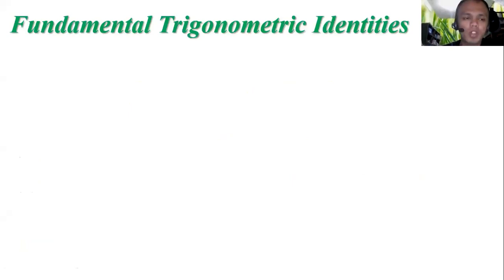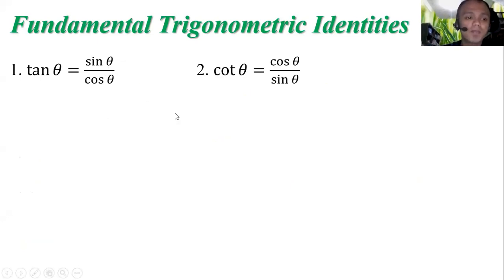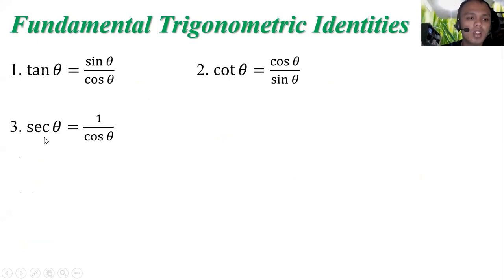Let us review the fundamental trigonometric identities. Tangent theta is equal to sine theta over cosine theta. Cotangent theta is equal to cosine theta over sine theta. Secant theta is equal to one over cosine theta.